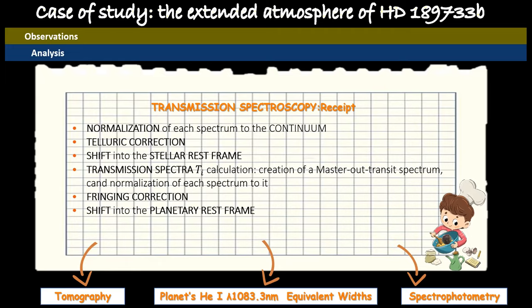This is the tomography. And in this diagram, we have on the x-axis the wavelength, on the y-axis the phase. Each row is a transmission spectrum. And you can see that there is a big blob in blue that is the in-transit helium feature. And you can see that this feature is at rest in the planet rest frame.